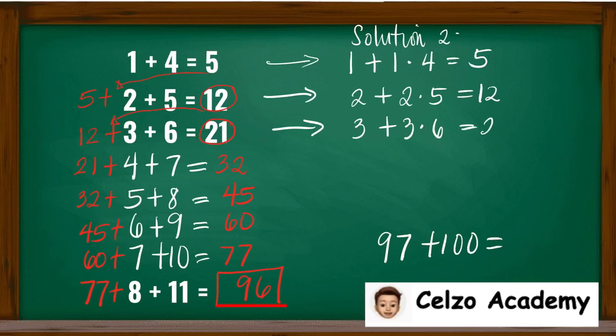Third one is the same thing as 3 plus 3 times 6, which is 21, and so on. If you will continue the process, this pattern will work. You have 4 plus 4 times 7, that is 32, and so on.